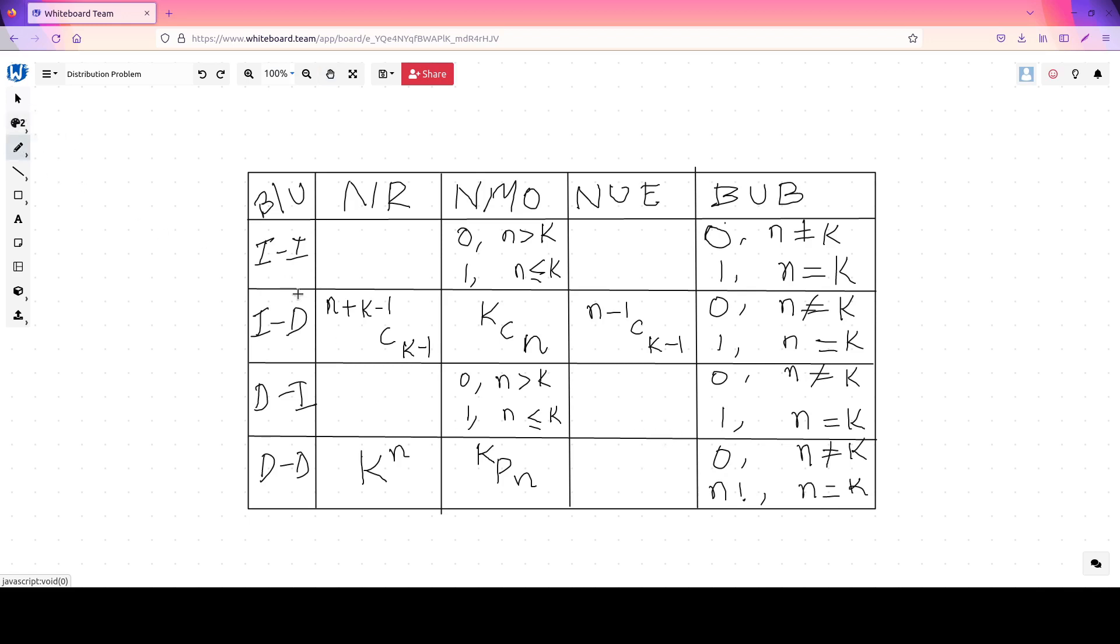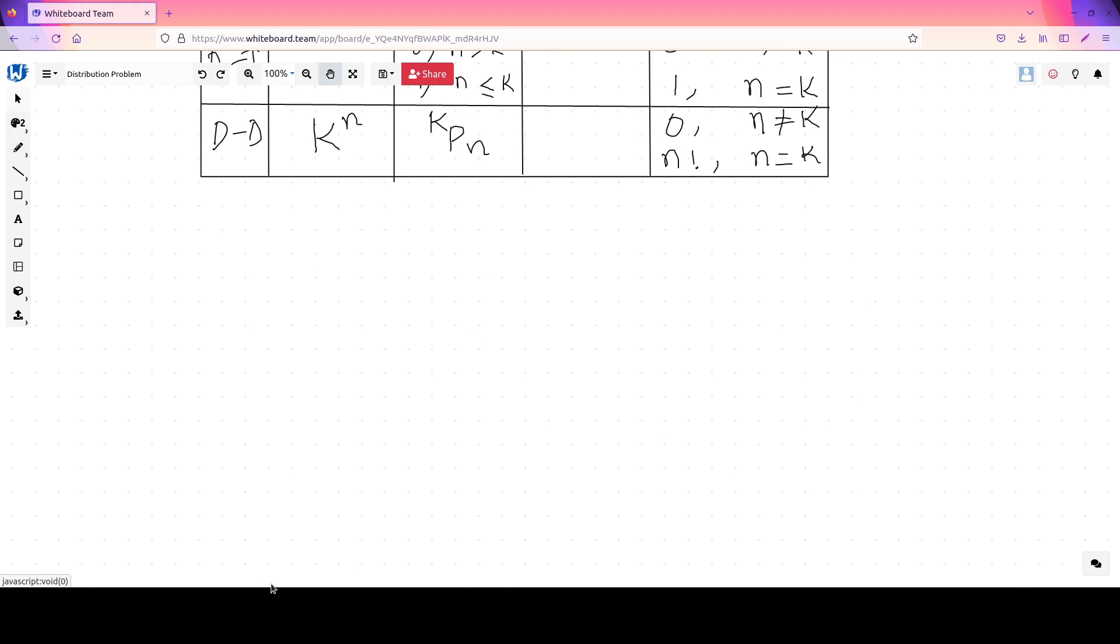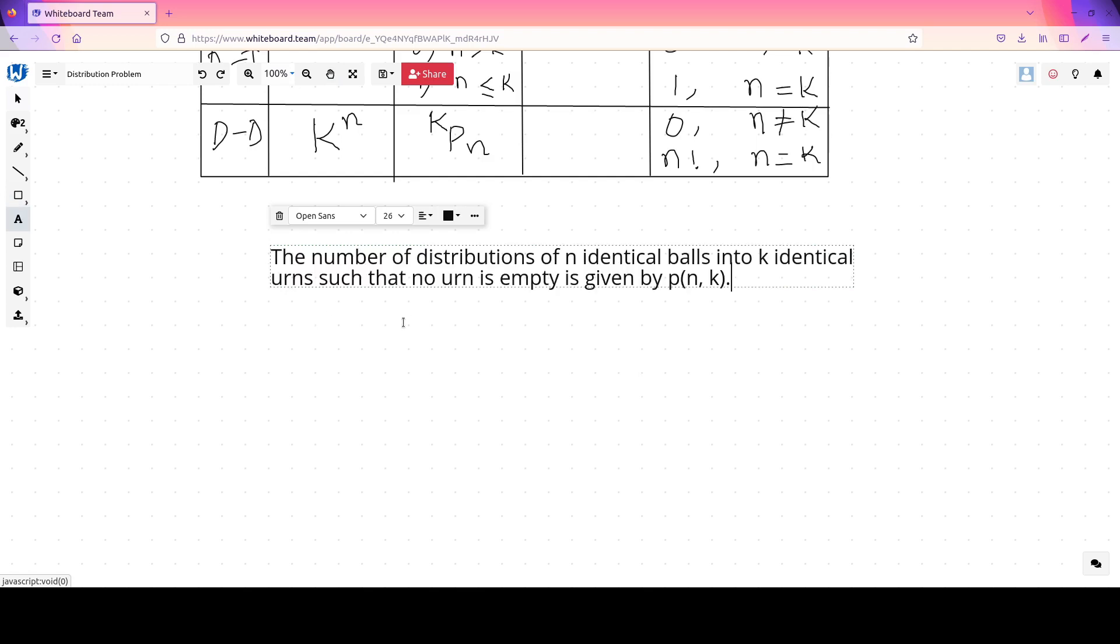So let's get started with the first one and try to fill this complete set. So the number of distribution of n identical balls into k identical urns such that no urn is empty is given by p(n,k).